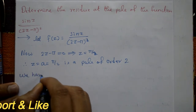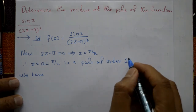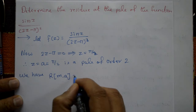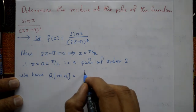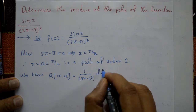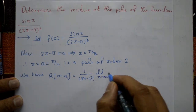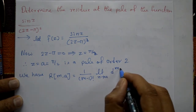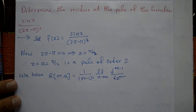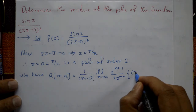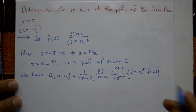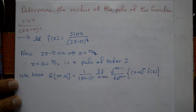We have m = 2 and the residue formula: R(a) = 1/(m-1)! · limit as z tends to a of d^(m-1)/dz^(m-1) [(z - a)^m · f(z)], with order m = 2.